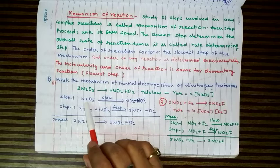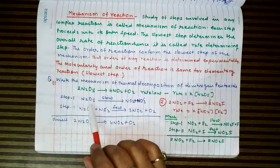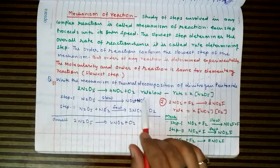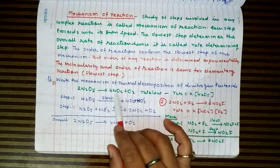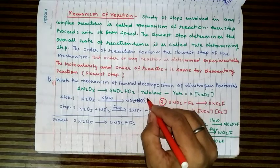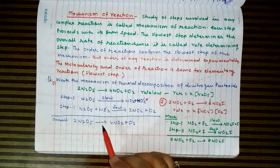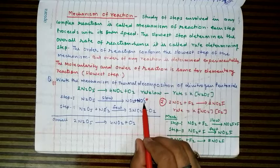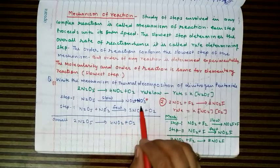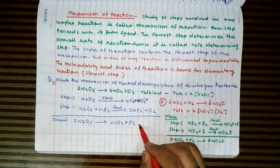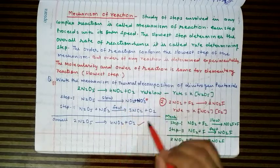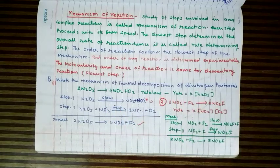We start writing the mechanism from the rate law expression. Since one molecule of N2O5 is in the rate-determining step, the first step involves one N2O5 decomposing: N2O5 → NO2 + NO3. NO3 is not in the products, so it acts as a reaction intermediate. Being reactive, NO3 proceeds in the next fast step to give the product. Cancelling the intermediate gives the overall stoichiometry. The first step is slow — the rate-determining step — consistent with the rate law.